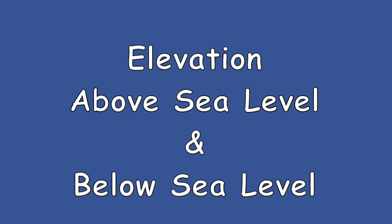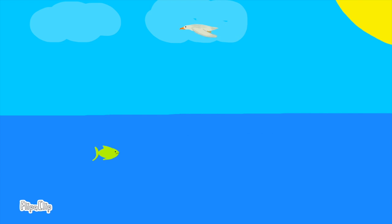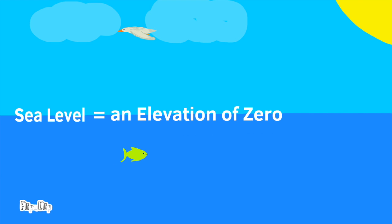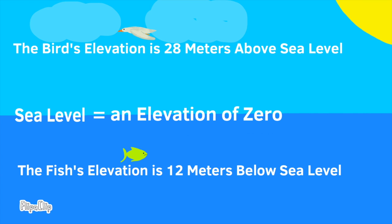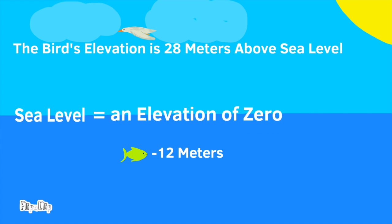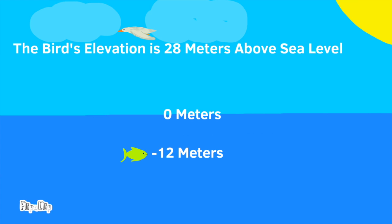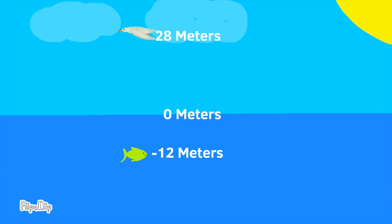In this lesson I'm using a fish and a bird to explore above sea level and below sea level. The fish's elevation is 12 meters below sea level and the bird's elevation is 28 meters above sea level. The elevation of the fish is negative 12 meters and the elevation of the bird is 28 meters. The surface of the ocean, or the sea, is sea level, or zero meters.